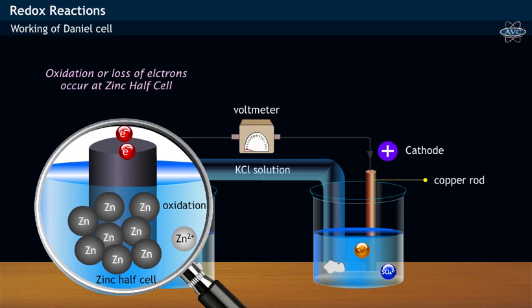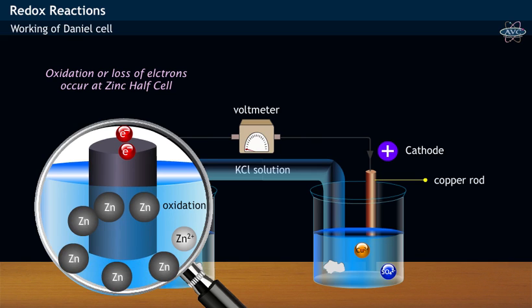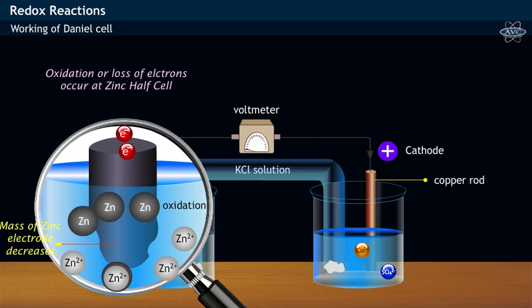Over a period of time, with the loss of zinc atoms as zinc ions, the mass of zinc electrode decreases.